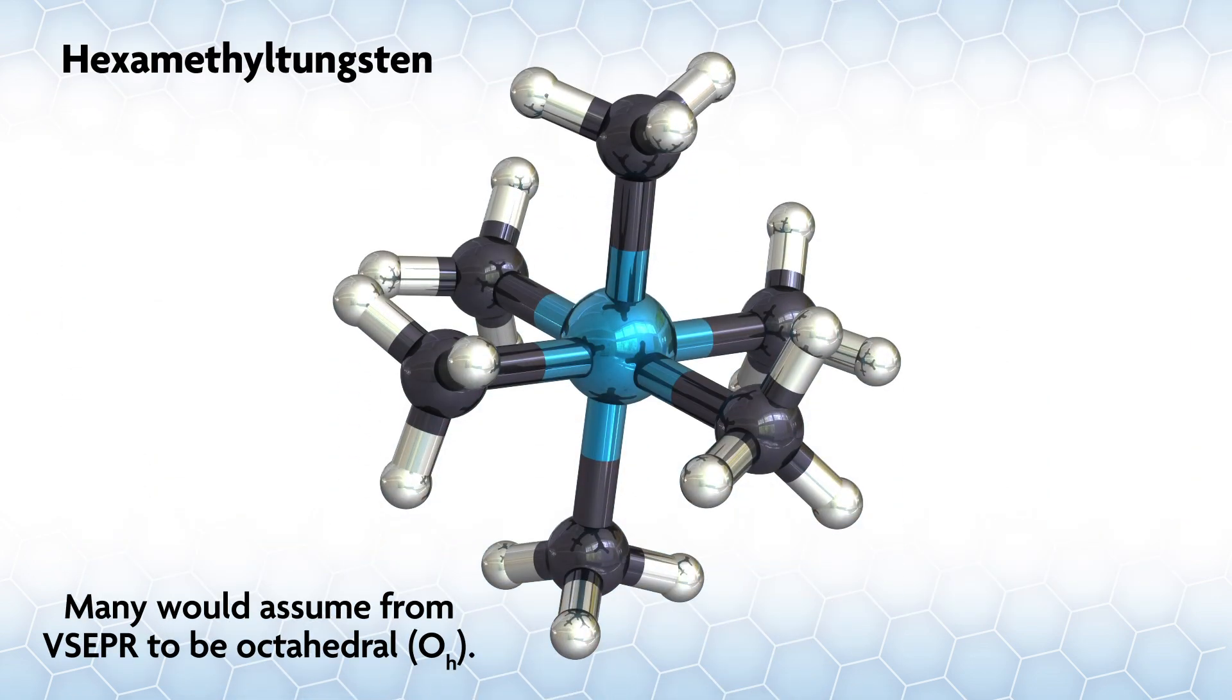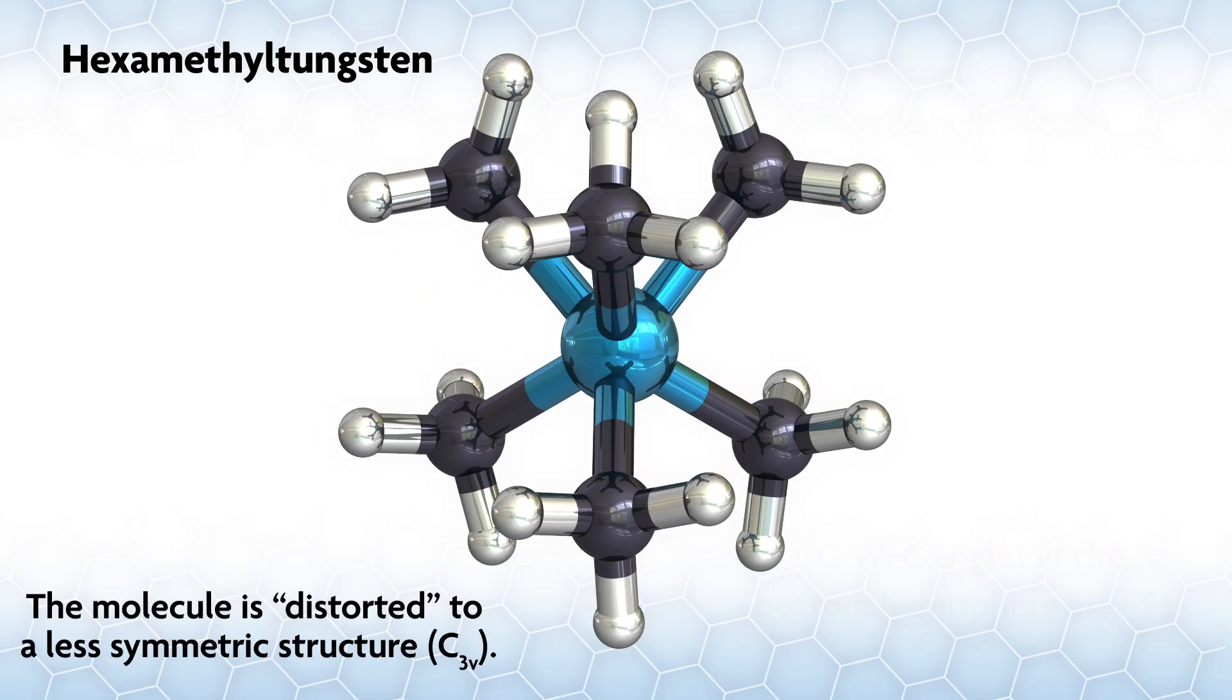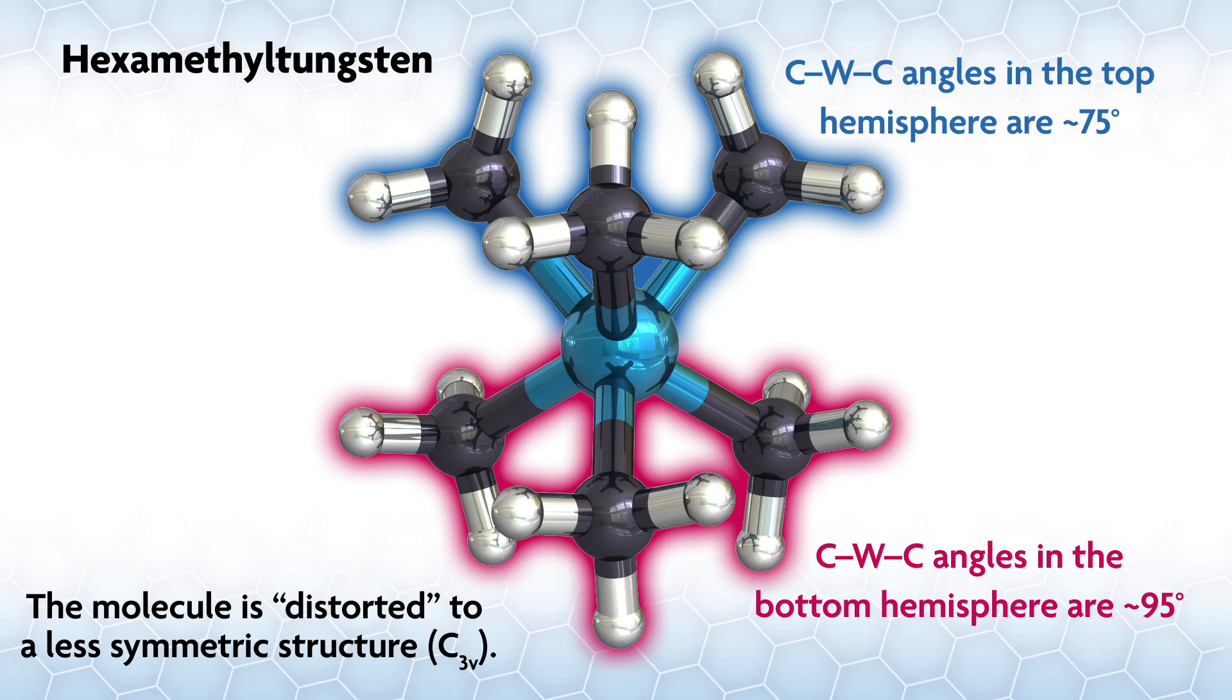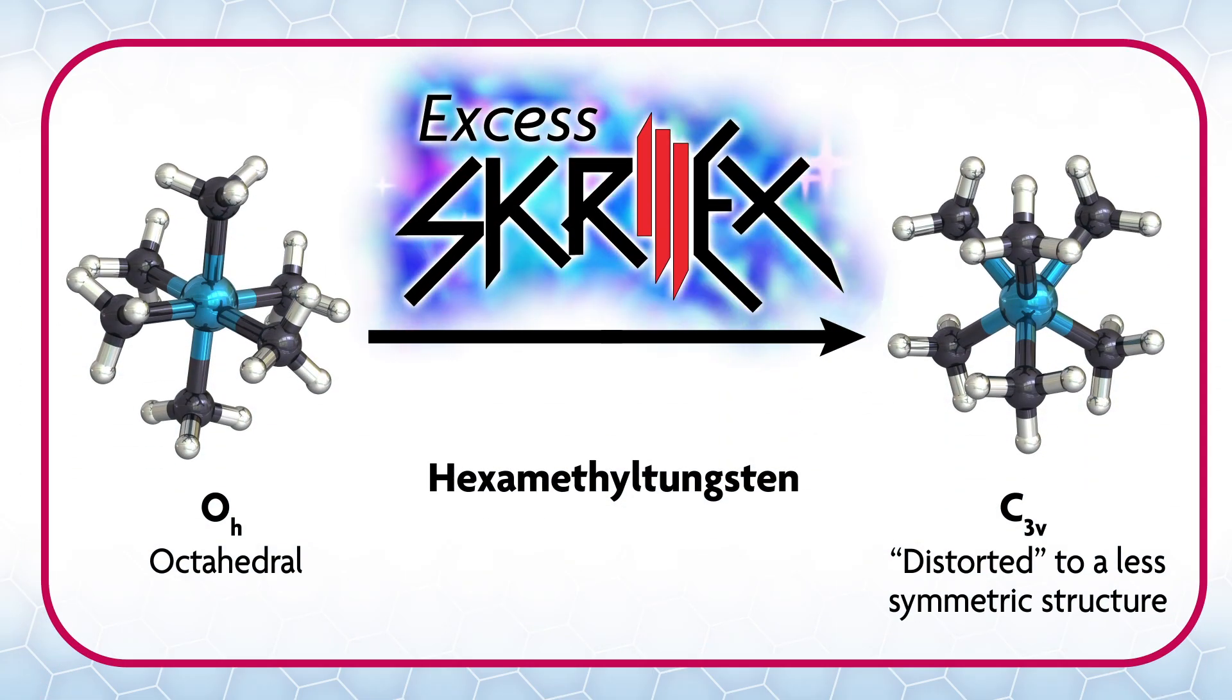But even here people discuss distortion of a complex, which usually means deviation from an expected VSEPR structure. For example, hexamethyltungsten is a six-coordinate metal compound that many would assume from VSEPR to be octahedral. However, the molecule is distorted to a less symmetric structure - if you know group theory, it's C3v.